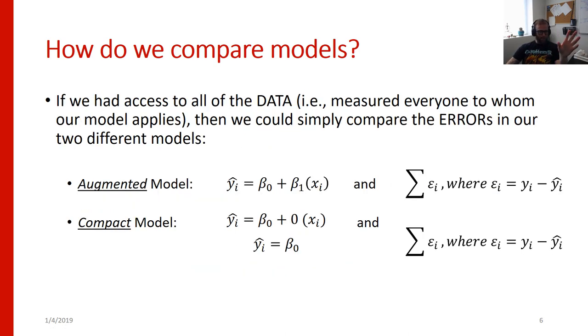So if we had access to all the data, that is we were able to measure everyone to whom our model applies. Maybe we said I want to know about the heights of every human adult in the United States. We could simply add up all the errors and compare our two different models. So we could look at the augmented model or the more complicated model in which we have height conditional on weight contrasted against the compact model or the simpler model in which height is not conditional on weight. And you can see basically this one has one parameter beta 0. So it's compact. This one has two parameters beta 0 and beta 1. So it's augmented or complex. And if we had access to the whole population, we could just add up all the errors and then say well which one was more errorful. If we had one that was less errorful than the other for everyone, it would be easy to say which model is better.